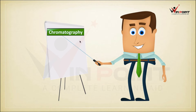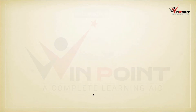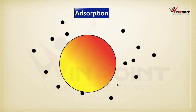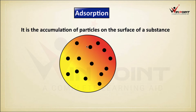Chromatography is based on the process of adsorption — not absorption, but adsorption. We are considering a substance called the adsorbent, and there are some particles called the adsorbate. Adsorption is a process of accumulation of small particles on the surface of a large substance. It is a surface phenomenon, happening only on the surface.